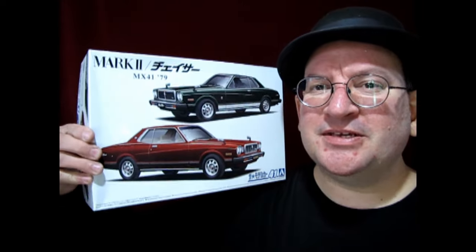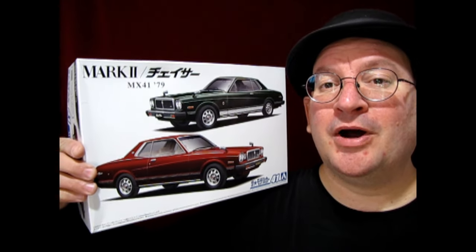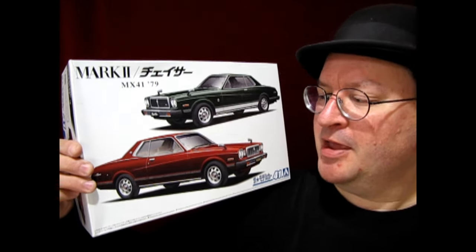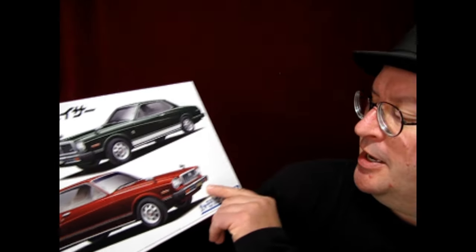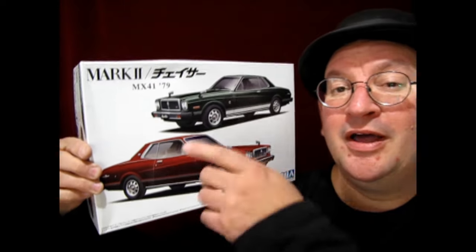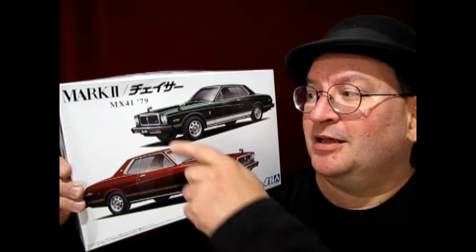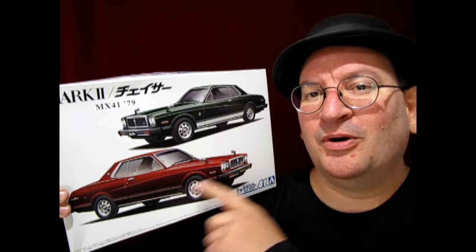So today we have a double feature, two model cars in one box. This is the 1979 Toyota Mark II Chaser. You can also build this one as a Mark II. Now the cool thing about this model kit is there's actually two cars in it. So you can build one this way or one that way.